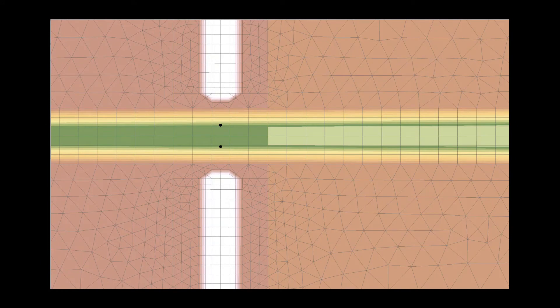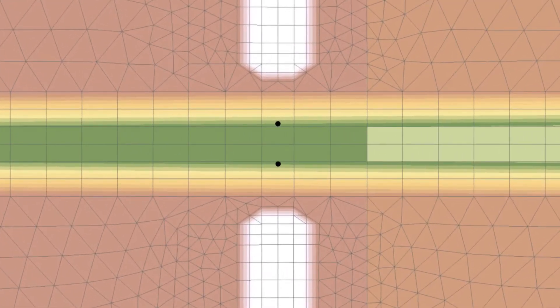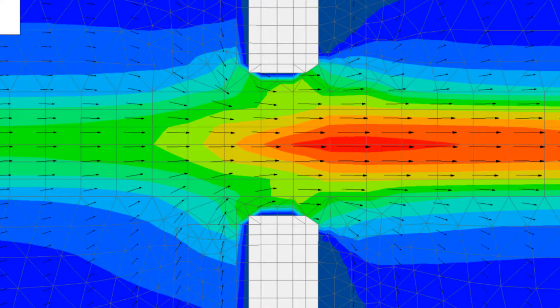The third method is to use an obstruction to represent piers. Obstructions are useful when the pier size is small compared to the typical elements, or if detailed hydraulics are not necessary at the pier location.